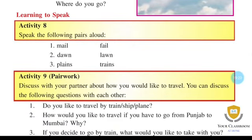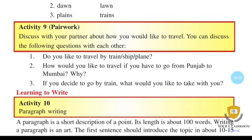Number 1: fell, down, lawn, planes, trains. Activity 9 - Pair Work: Discuss with your partner how you would like to travel. Question 1: Do you like to travel by train, ship, or plane? Question 2: How would you like to travel if you have to go from Punjab to Mumbai, and why?